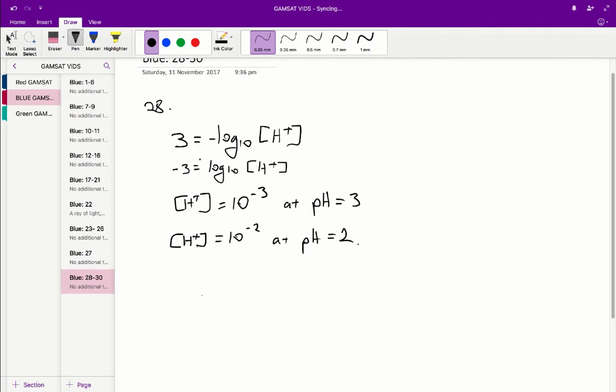What we can find is where the pH is equal to 3, the concentration of hydrogen will be equal to 10 to the negative 3. So at pH 3, the concentration of hydrogen is equal to 10 to the negative 3.